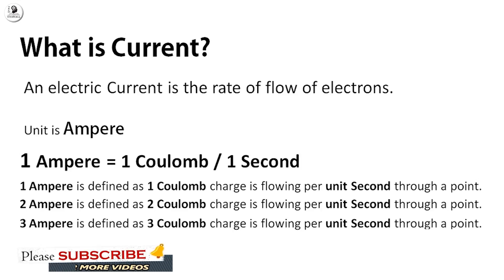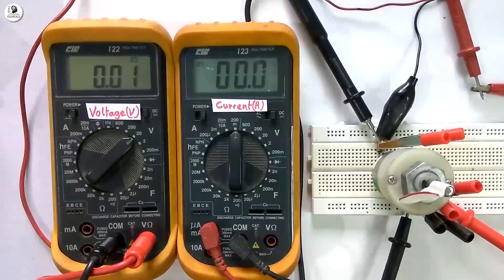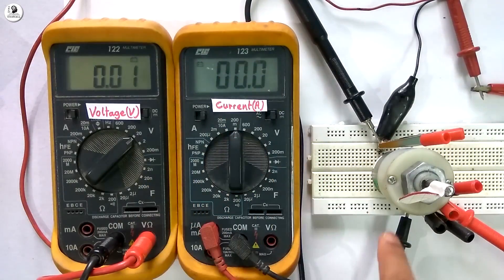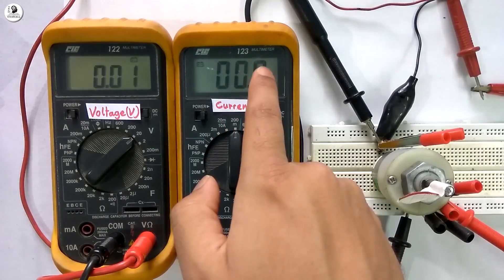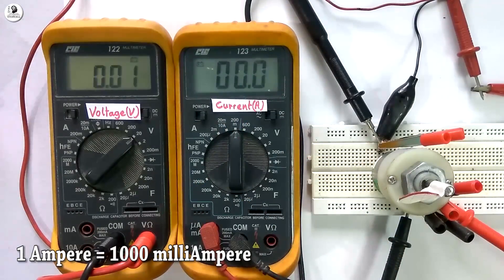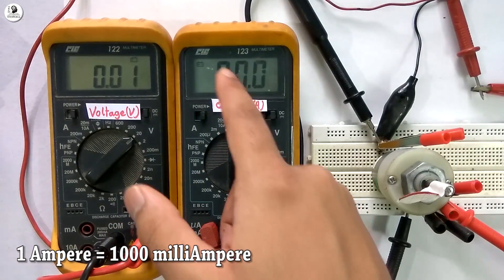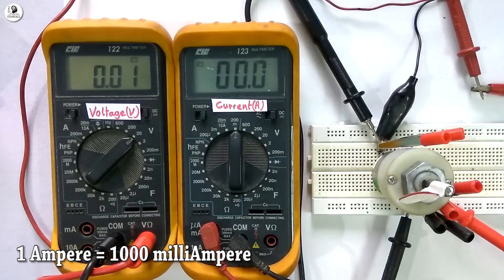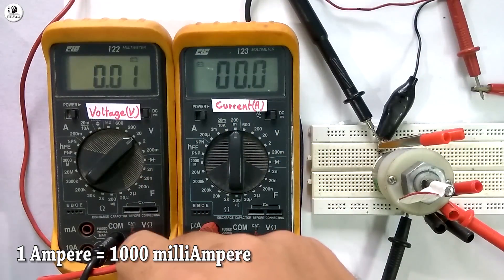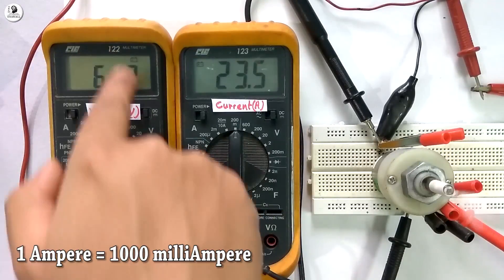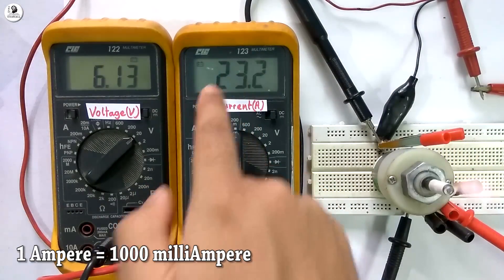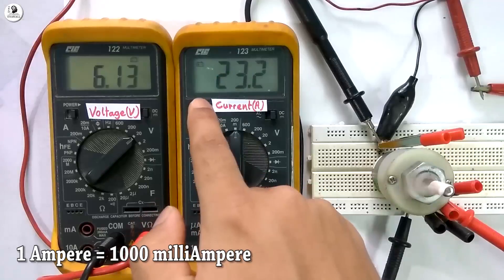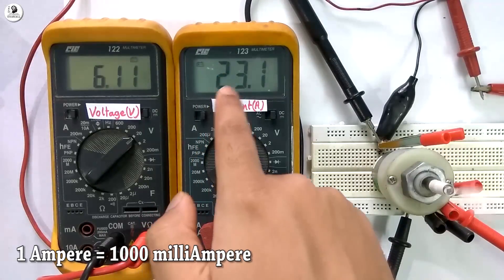Let's go back to the experiment with the DC motor. As I have supplied no voltage across the motor, no current is flowing through it and the reading is zero. We are observing the current reading in milliampere scale here — 1 ampere equals 1000 milliampere, so we have to divide the reading by 1000 to get the ampere reading. Now, if I supply the voltage, you can see I have supplied 6.1 volts to the motor, and accordingly we are getting the current reading in milliampere. If we convert this reading to ampere scale, it will be 0.023 ampere.